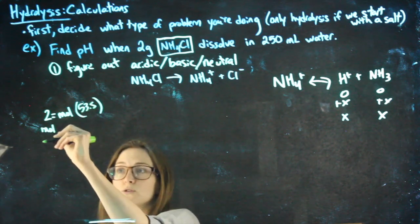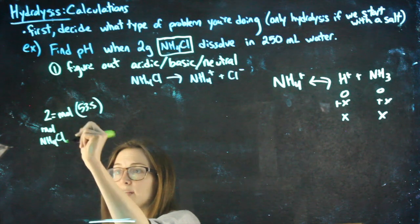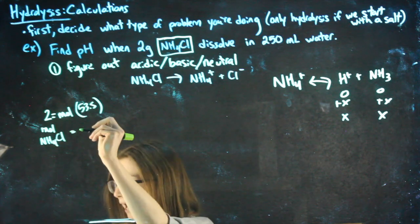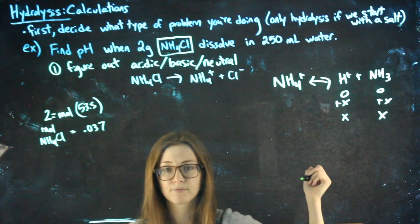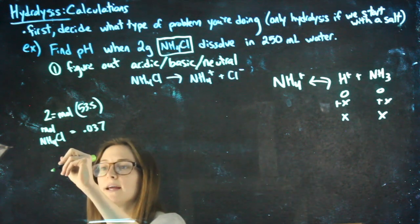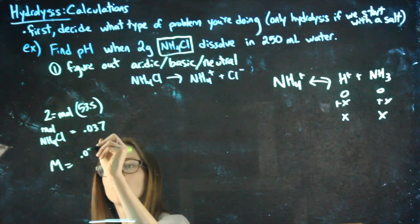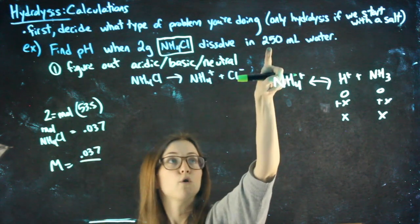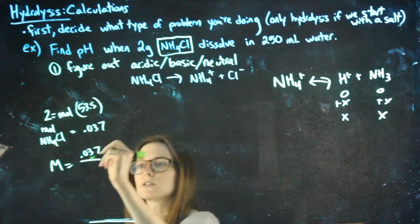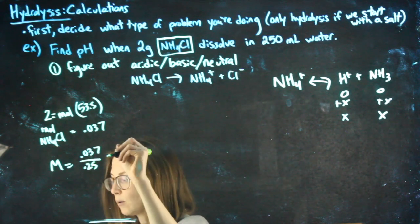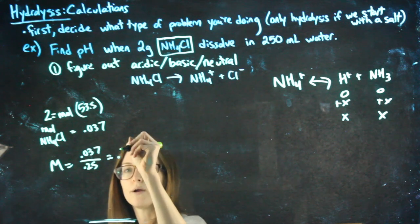NH4Cl is going to have a molecular weight of 53.5. When I solve for the moles, realize that those are the moles of NH4Cl, and that will be 0.037. Then I can go on to find molarity by doing moles over the liters, turning this into liters, and I will get the molarity to be 0.15.